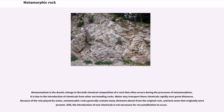Metasomatism is the drastic change in the bulk chemical composition of the rock that often occurs during the processes of metamorphism. It is due to the introduction of chemicals from other surrounding rocks. Water may transport these chemicals rapidly over great distances. Because of the role played by water, metamorphic rocks generally contain many elements absent from the original rock, and lack some that originally were present. Still, the introduction of new chemicals is not necessary for recrystallization to occur.